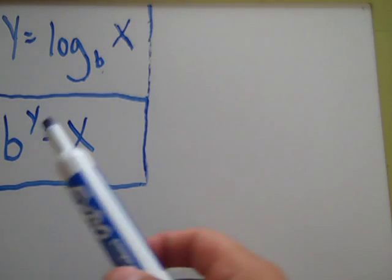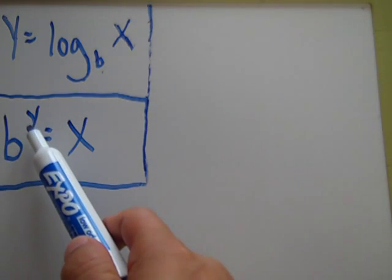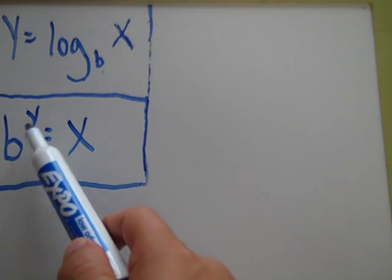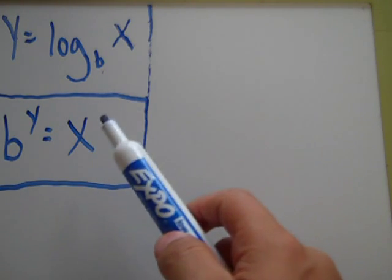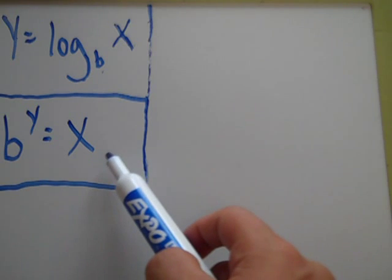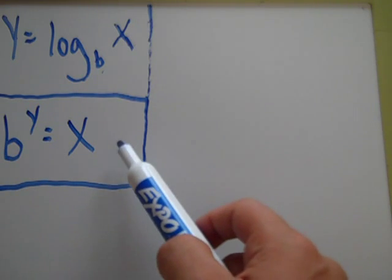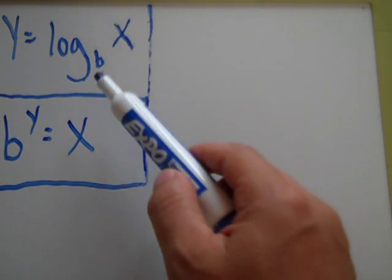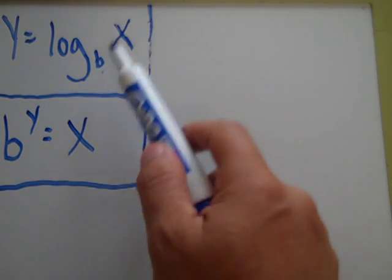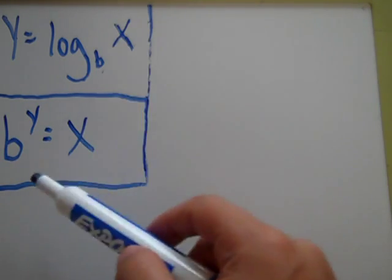And the exponential form of that is base to the y power equals x. And this right here is just the exponential form, the exponent form of the logarithm which is up here. It's just another way to express it, it's the same thing.